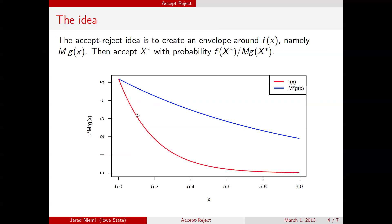So red is the density we're trying to sample from, and g of x, or m times g of x is up here. And so we're going to draw a sample from g.